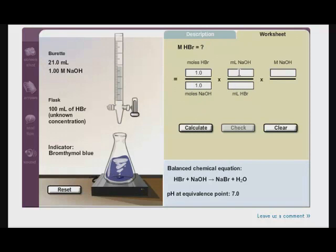Now I'm going to come over to my data. Well, how many milliliters of sodium hydroxide did I use? I used 21 milliliters. Now how many milliliters did I have in my flask of HBr? I had 100 milliliters. And what was my concentration of my sodium hydroxide? It was 1.00 moles per liter.